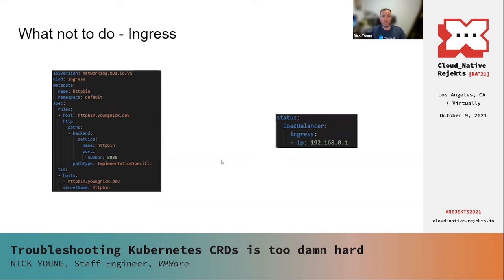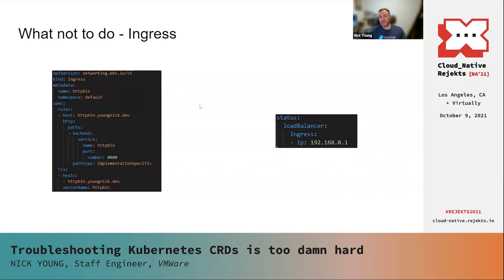That IP address is vital — the idea is that you can CNAME httpbin.young.dev to it and your request will be routed correctly. But it doesn't tell you anything about what happens if something goes wrong. If you make a mistake in the service and the service doesn't exist, nothing gets configured, and there's no way to know it was the service that broke without looking at the ingress controller logs or something else. There's just nowhere on the object to put that information. As a friend of mine put it, if you break something with Ingress you've got to solve the murder mystery of exactly what you broke.